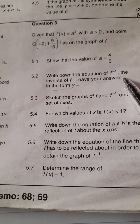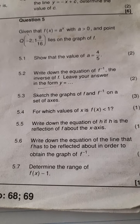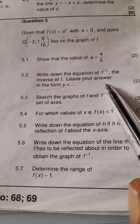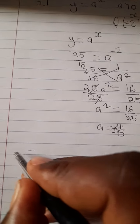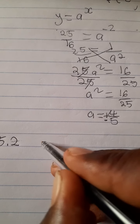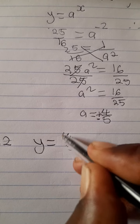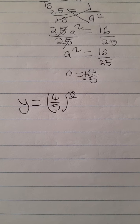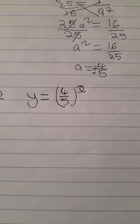Now let's go to 5.2. At 5.2 we are required to write down the inverse of f and leave the answer in the form y equals. Be very careful to follow the instruction — your solution must be in the form y equals. Remember, a is now 4 over 5, so our function is y equals 4 over 5 to the power of x. To find the inverse, we swap x and y.